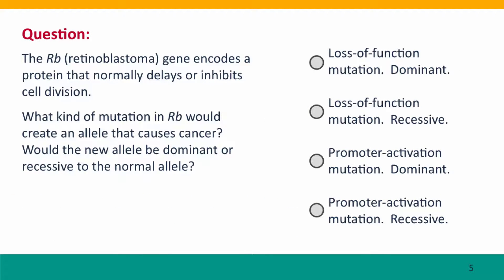Here's a question that should take you back to Module 4 — but don't go back and look at Module 4. Instead, just think this question through. Given that the retinoblastoma gene encodes a protein that normally delays or inhibits cell division when cells shouldn't divide, what kind of mutation in RB would create an allele that causes cancer? Would it be a loss-of-function mutation or a promoter activation mutation? And would that mutation be dominant or recessive to the normal allele?